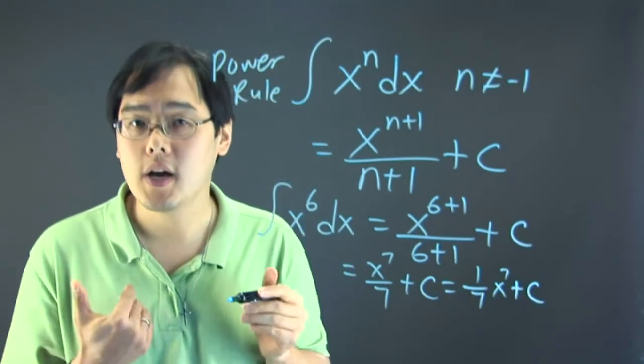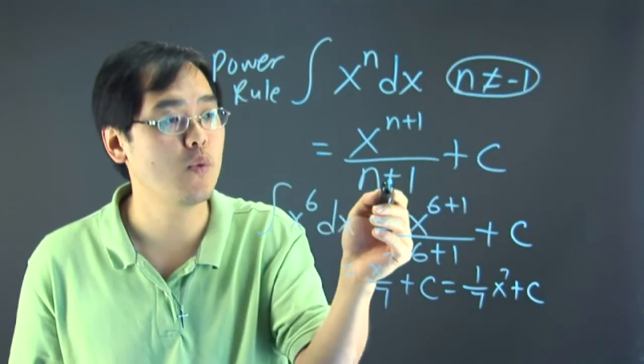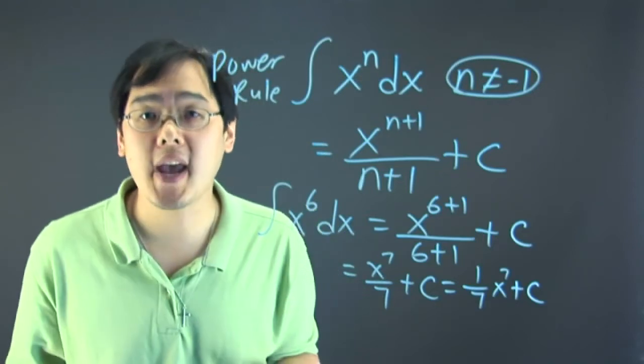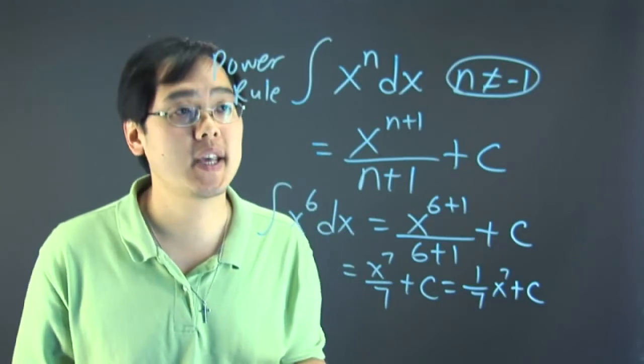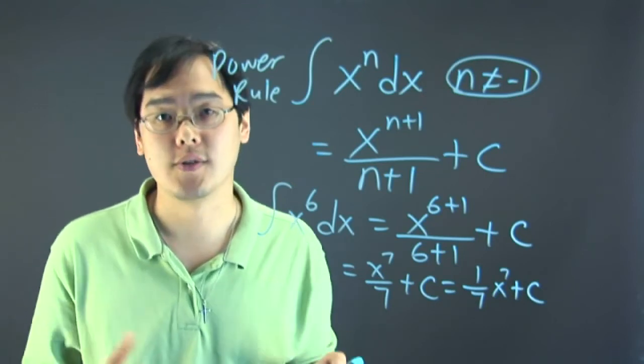I think you might understand now why the exponent cannot equal negative one because if you have negative one down here, that's going to give you zero in the denominator. But does that mean you can't integrate when the exponent is negative one? That's not really true. Here's another rule real quick to address that.